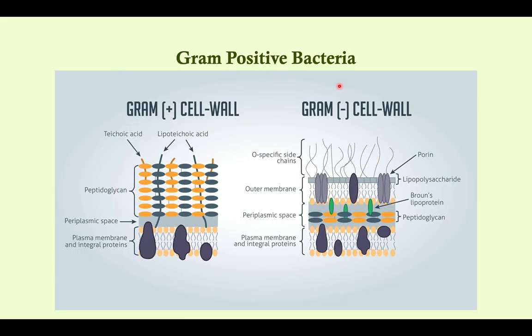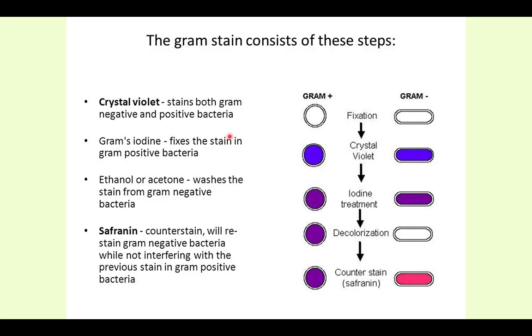I did an overview video on the gram-positive bacteria — all of this is very highly testable, so you've got to know this for Step 1: what each of these things are and the difference between a gram-positive or gram-negative cell wall. This is the gram-staining process; you should be familiar with that as well. We're going to talk about the classification, working your way down your algorithm, and then we'll talk about the characteristics of B. anthracis. There's one really important one because it's unique to this bacteria alone.